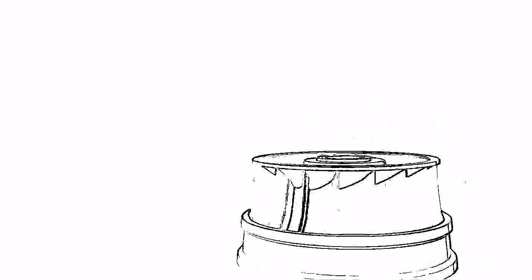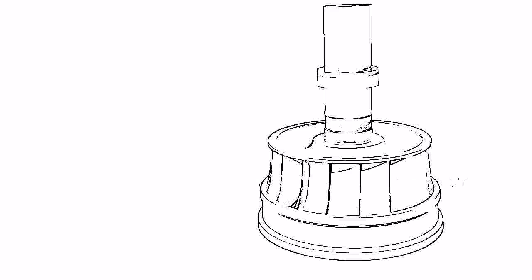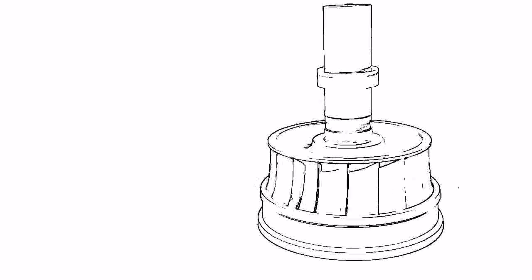The runner is connected to generator via a shaft for electricity production. This arrangement is fitted inside a spiral casing.